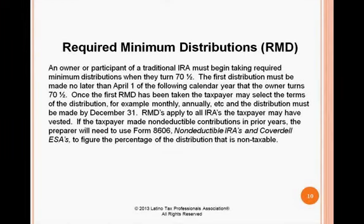An owner or participant of a traditional IRA must begin taking required minimum distributions when they turn 70 and a half. The first distribution must be made no later than April 1st of the following calendar year in which the owner turns 70 and a half. Once the first RMD has been taken, the taxpayer may select the terms of distribution — for example, monthly or annually — and subsequent distributions must be made by December 31st of each year. RMDs apply to all IRAs the taxpayer may have vested.